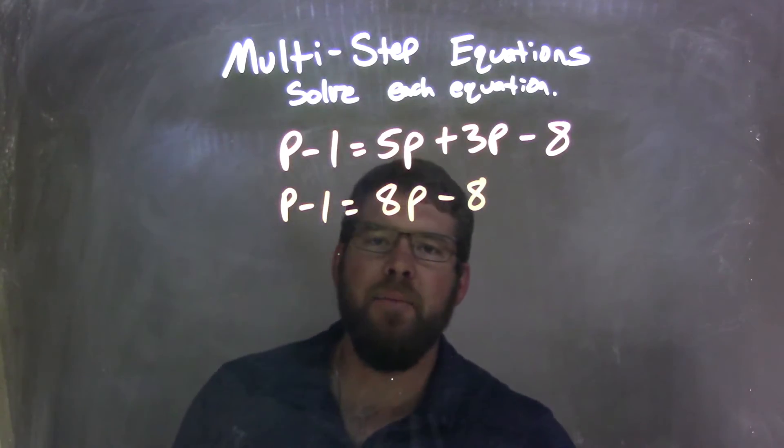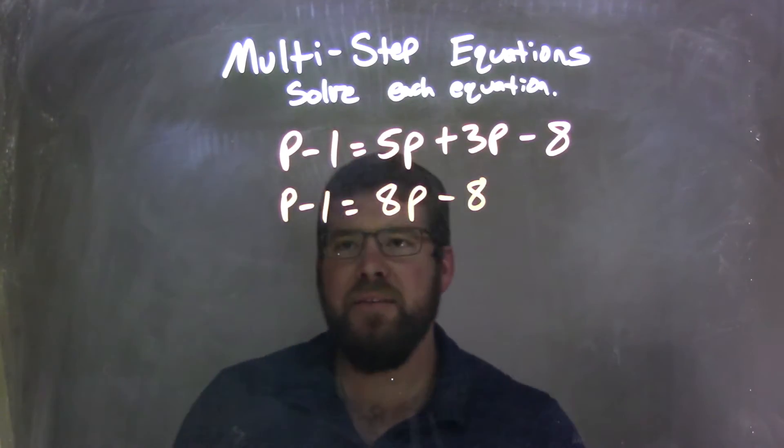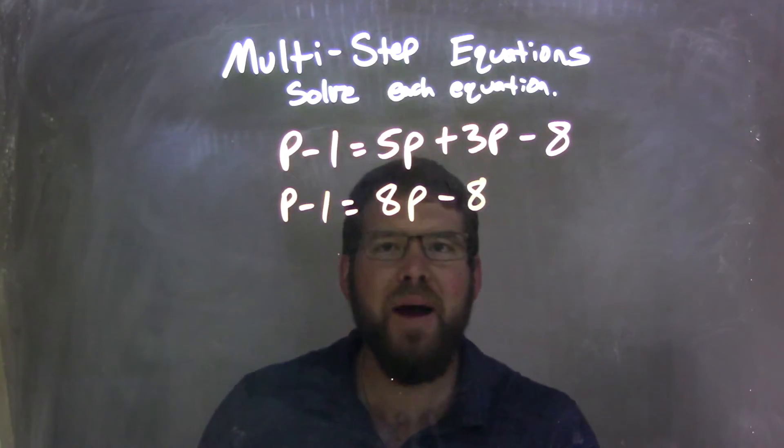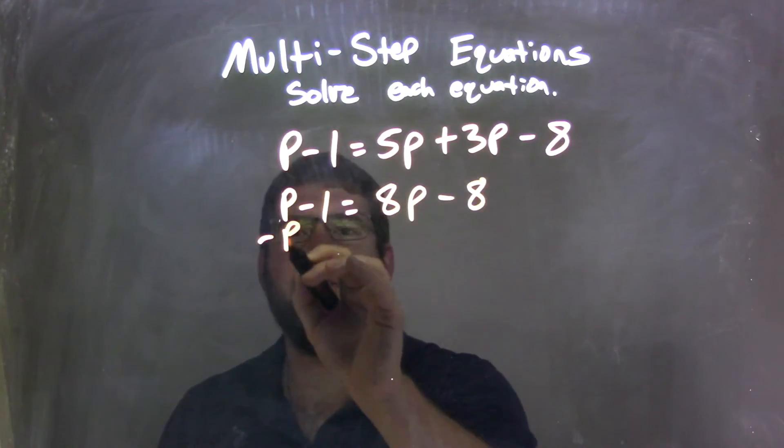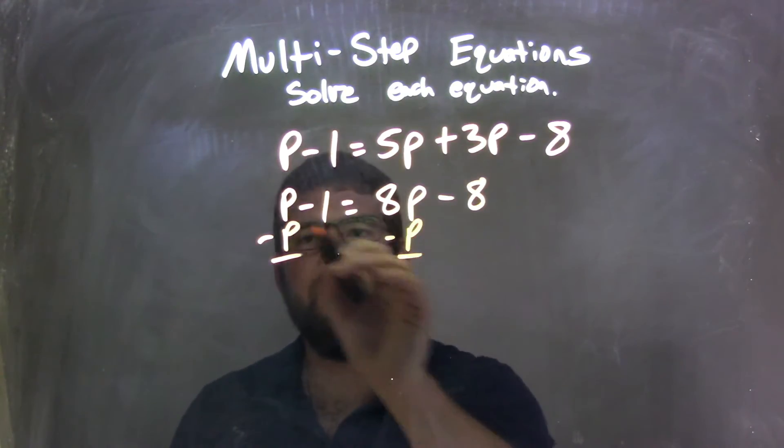So now I'm going to bring all my terms together. Well, in this case here, because I like to keep everything positive, it's up to you, I'm actually going to subtract the p to both sides, because this p is less than this p, and then I'm going to add an 8 to both sides.